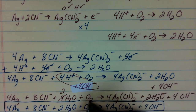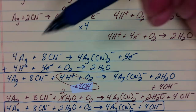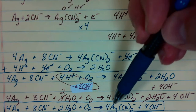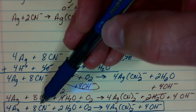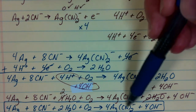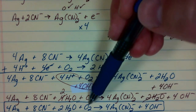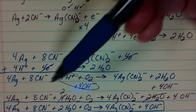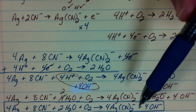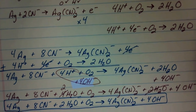This is a balanced redox reaction in basic solution. Let's check the atoms: 4 silver atoms on the left and 4 on the right; 8 carbons on each side; 8 nitrogens on each side; 4 hydrogens — 2 and 2 — on each side; and 4 oxygens on each side. Charge-wise, negative 8 on the left, and 4 times negative 1 plus 4 times negative 1 equals negative 8 on the right. Balanced.